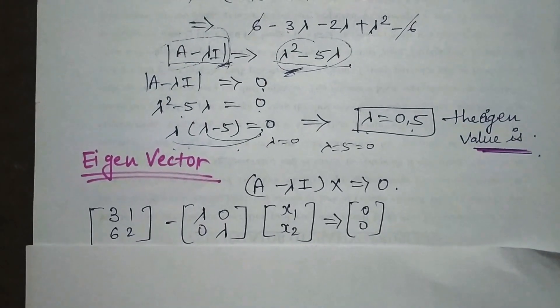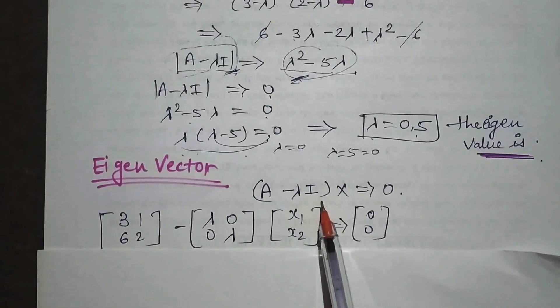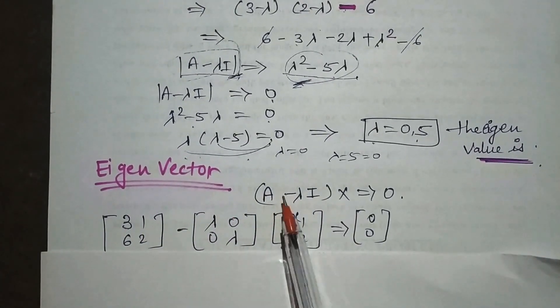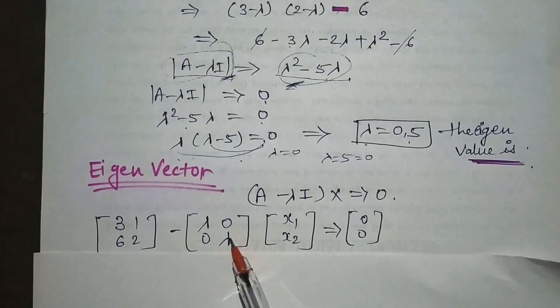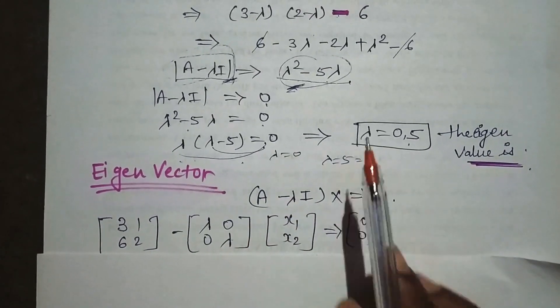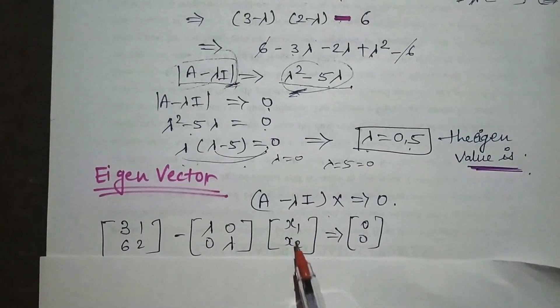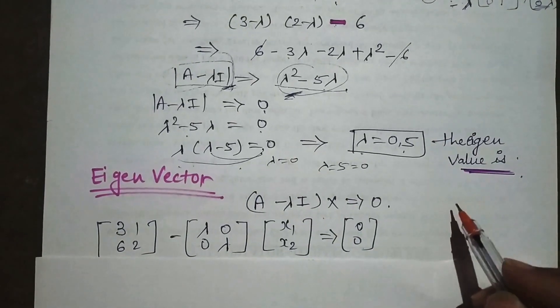Now let's proceed to the eigenvector. The format for finding eigenvector is (A - λI)x = 0. I already explained what A represents and where λI comes from. X represents [x₁; x₂] and this equals [0; 0].